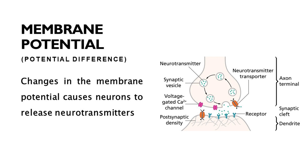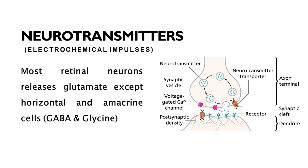Retinal neurons will release neurotransmitters from their synaptic terminal when the membrane potential becomes more positively charged. Neurotransmitters are used by nerve cells to communicate with other cells or the underlying cells. Glutamate, glycine, and gamma-aminobutyric acid or GABA are the neurotransmitters of retinal neurons. Glutamate is released by photoreceptors, bipolar cells, and ganglion cells, whereas glycine and GABA are released by horizontal cells and amacrine cells.